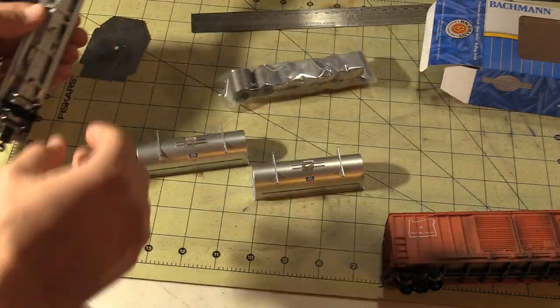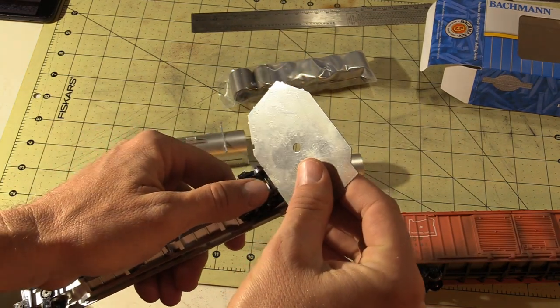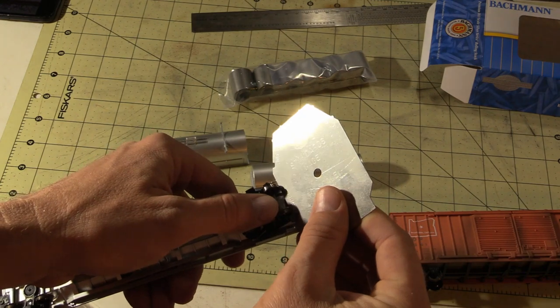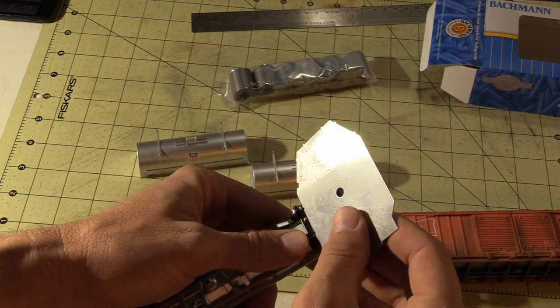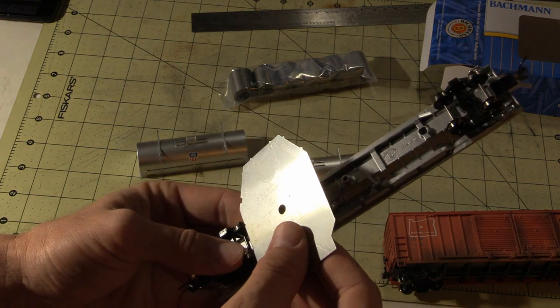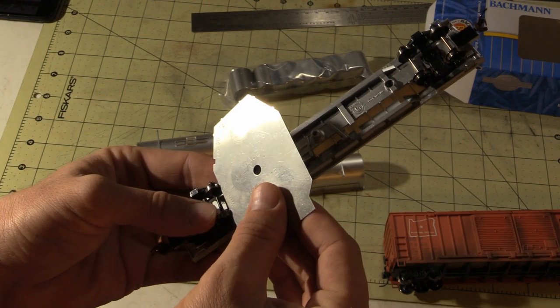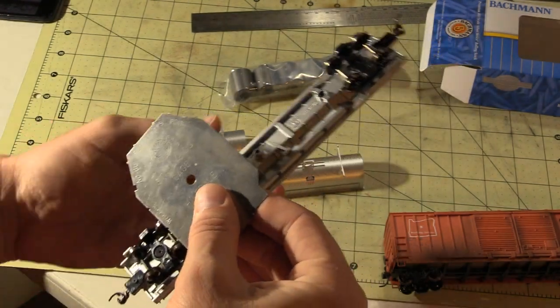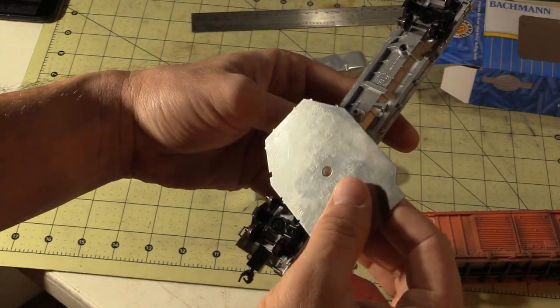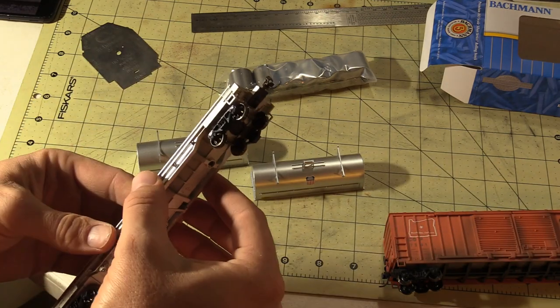If we go ahead and check the wheel gauge with our NMRA gauge, already that wheel is too far in, way too narrow. Check that one. That's a little narrow. Check here. That one is narrow. Check that one. That one too is way narrow. So all four axles are very narrow. They'll have to be pulled off and adjusted.